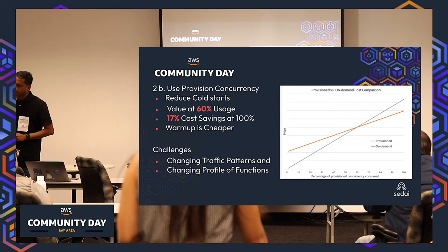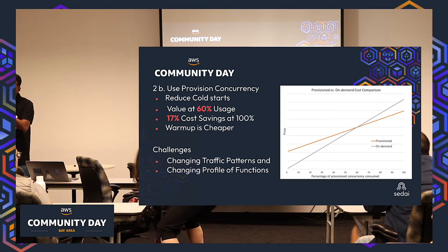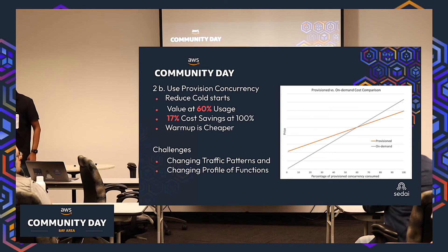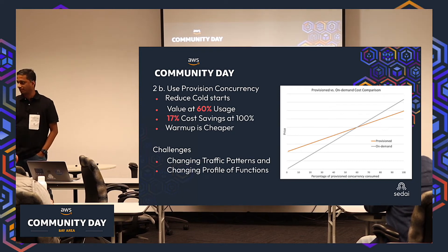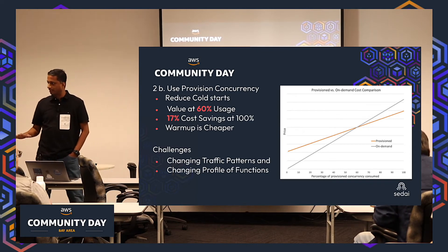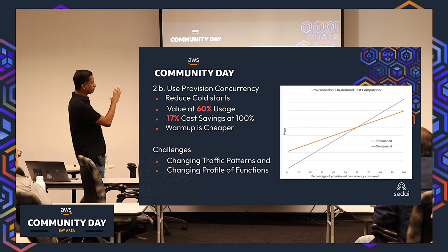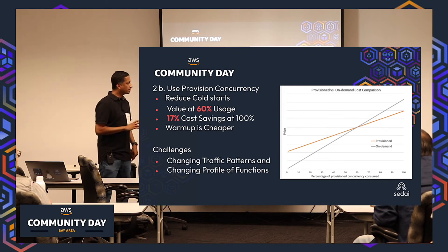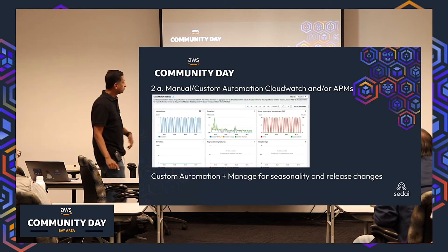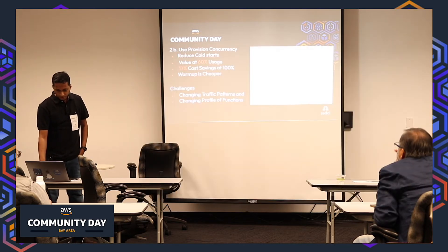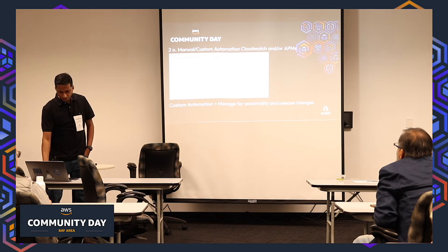In the Kubernetes world, provisioned concurrency is analogous to a replica set with HPA and VPA. You set it per Lambda based on expected traffic. You won't get a lot of cost benefit unless you hit 60% usage, but it's an availability improvement. If you have strong SLOs and don't want to see latency spikes, provisioned concurrency is appropriate. You can also automate it — that covers options 2A and 2B.